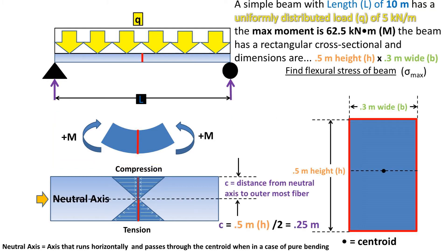The point on the beam where the compression force turns into tension force is the neutral axis. The neutral axis is the line or axis that runs horizontally and passes through the centroid, when in a case of pure bending or no axial force on the beam.